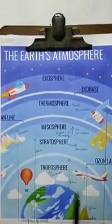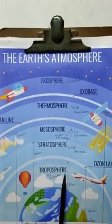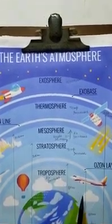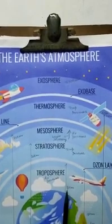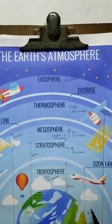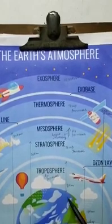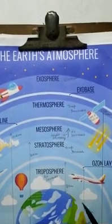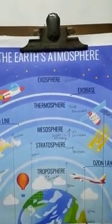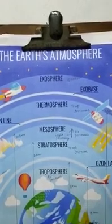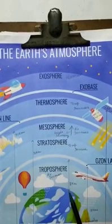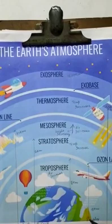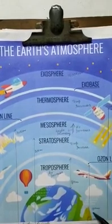First of all, we will discuss regarding troposphere. This is the lowest layer of the atmosphere. It extends to a height of about 8 km from the pole and about 18 km from the equator. See, this is the pole's distance of 8 km. This is the equator's line from where it is measured as 18 km.